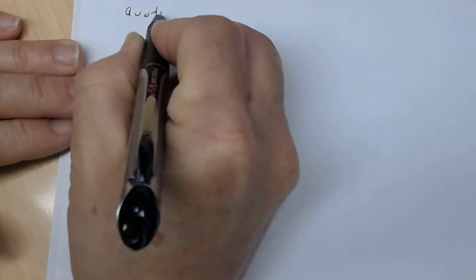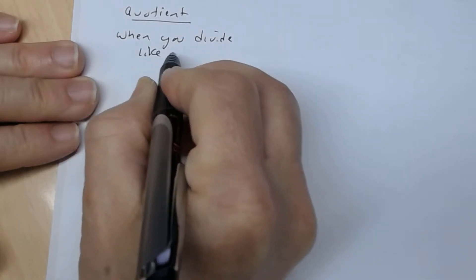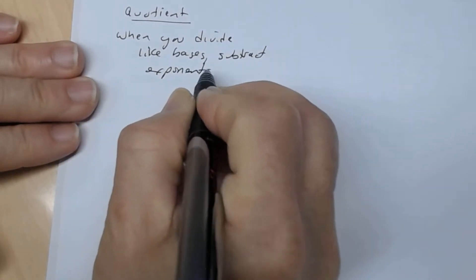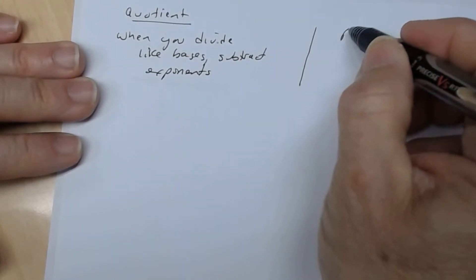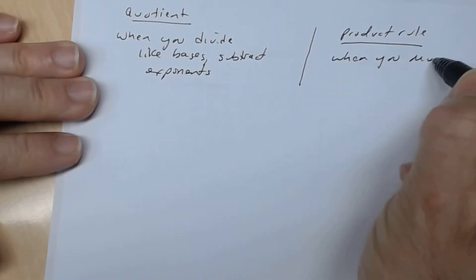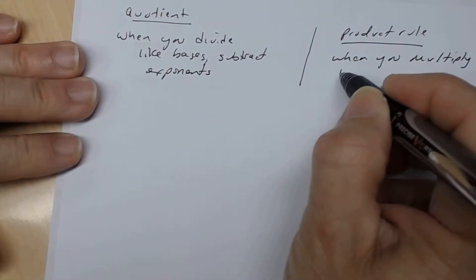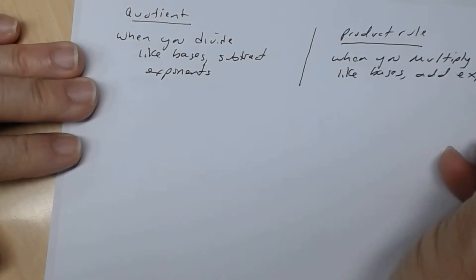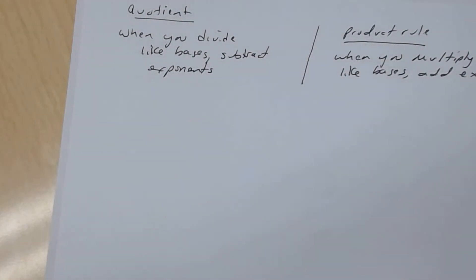So the quotient rule — remember, the quotient rule states that when you divide like bases, you subtract exponents. So when you divide like bases, you subtract exponents.